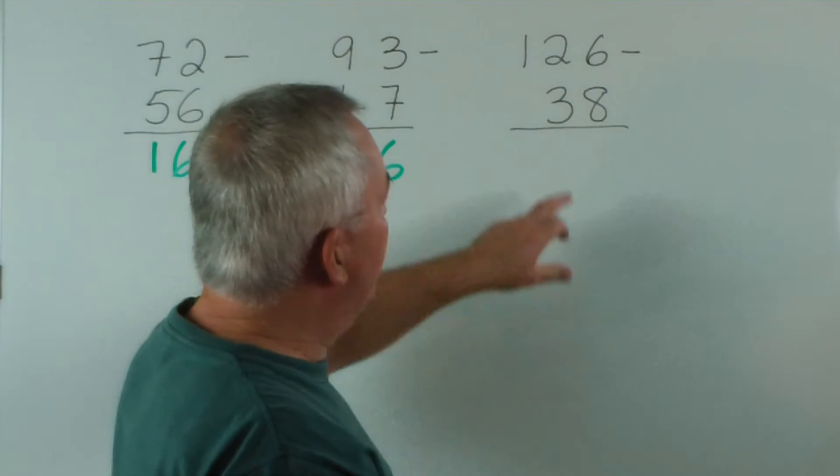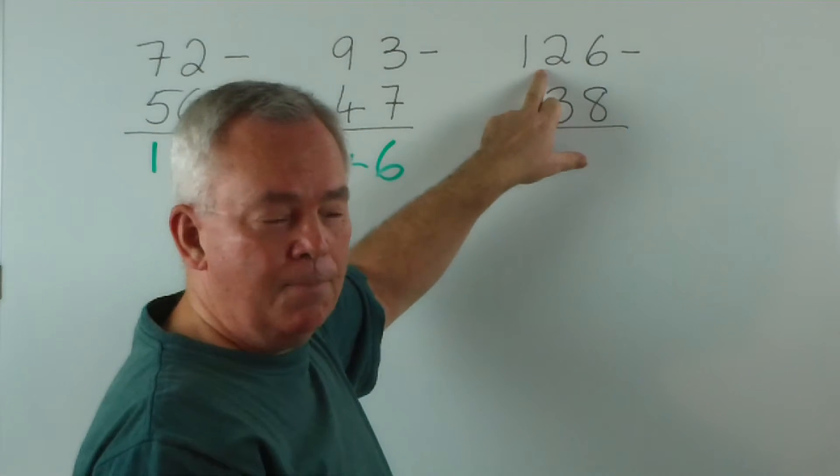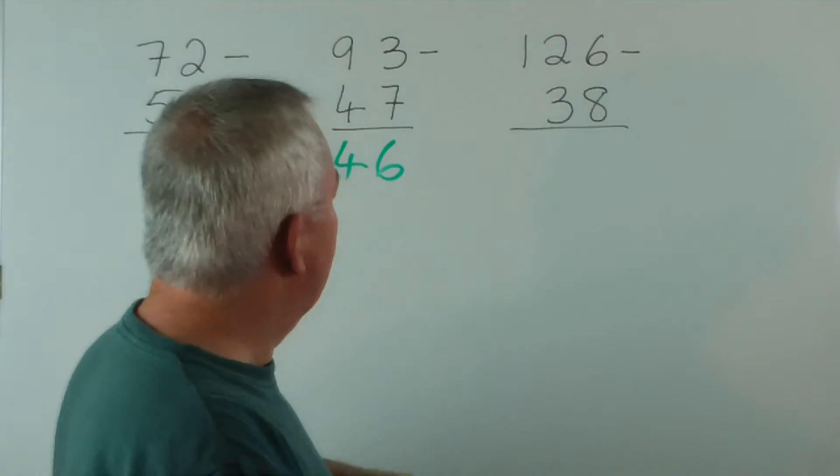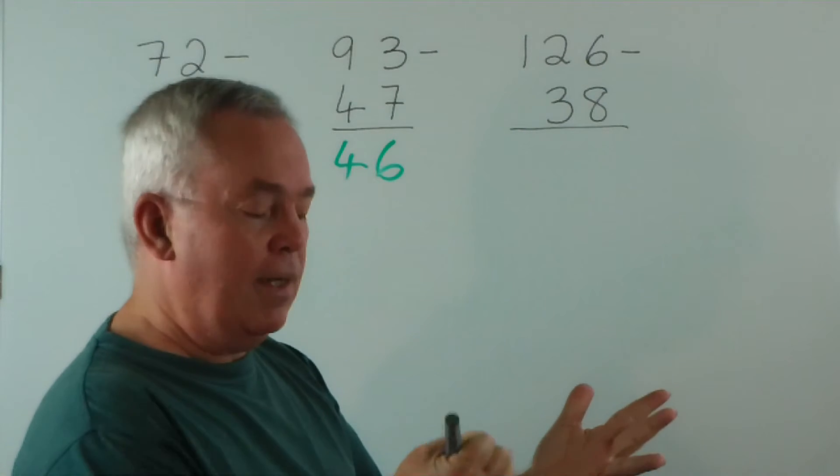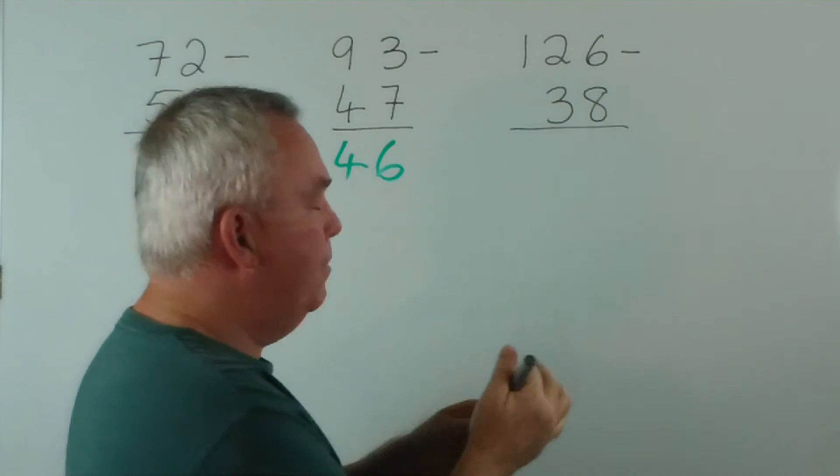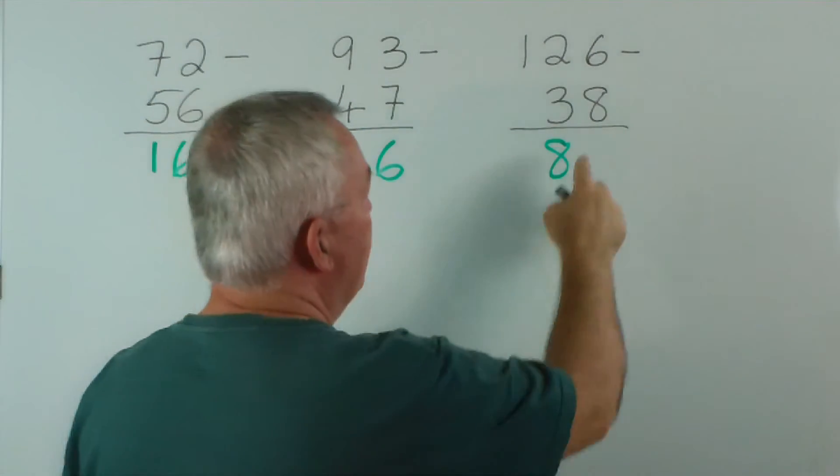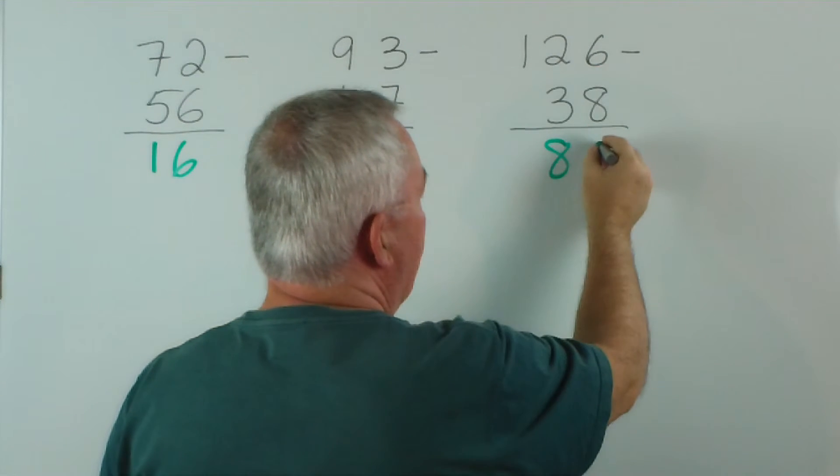From here, from 30 up to 120 — I'm starting to slip into another method. I don't want to do that. Let's count from 38 — 48, 58, 68, 78, 88, 98, 108, 118 — that's 80. We're now up to 118, and to get from 118 to 126, we have to add another 8.